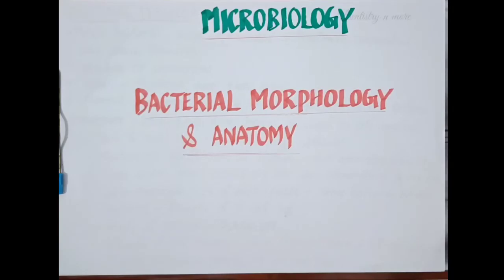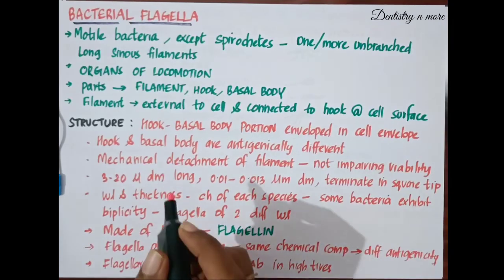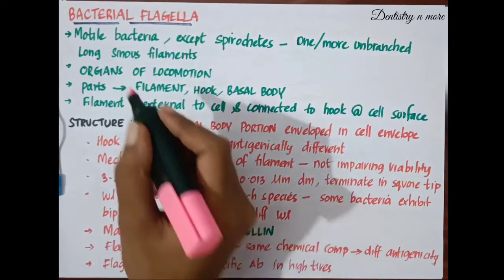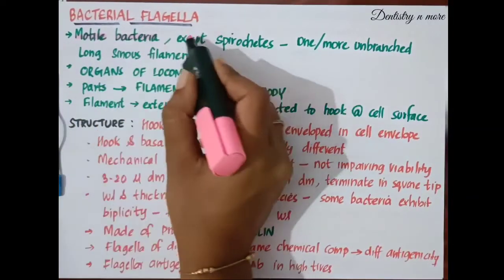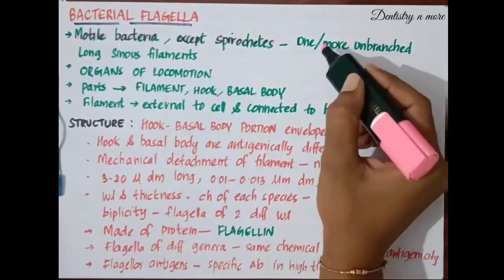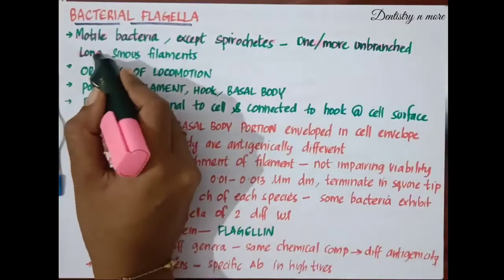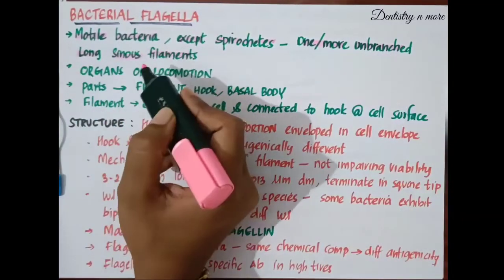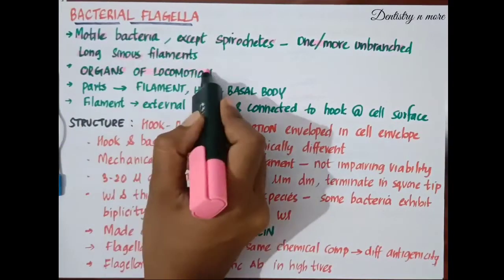Hello all, this is the continuation of bacterial morphology in anatomy and today we will be discussing about bacterial flagella. Bacterial flagella is present in motile bacteria except spirochetes. We can see one or more unbranched long sinuous filaments and bacterial flagella are the organs of locomotion.